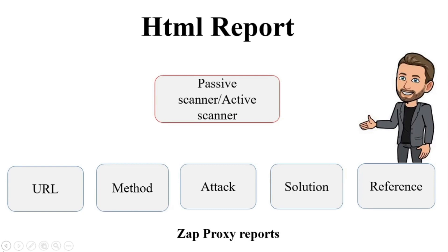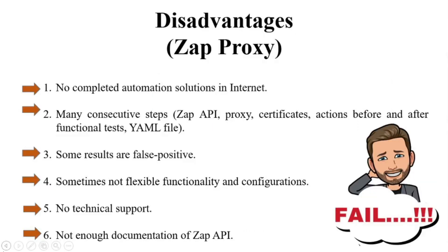ZAP has many features, but sometimes you can encounter limitations in configurations and integration with different tools. For example, I couldn't find any possibility to run ZAP without Slabs, but Selenium Grid plus Docker is a good replacement. Open source doesn't have good technical support — you can ask questions on forums but won't always find answers. ZAP has a very nice API UI for different ZAP actions, but documentation is very limited and doesn't explain many important details.